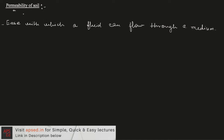So what do we mean by permeability in general? Permeability means the ease with which a fluid can flow through a medium. When we are talking particularly about soil, the fluid we will mostly encounter is water and the medium is the soil itself. So we can define the permeability of soil as the ease with which water can flow through soil.